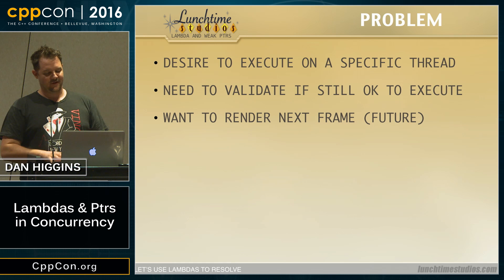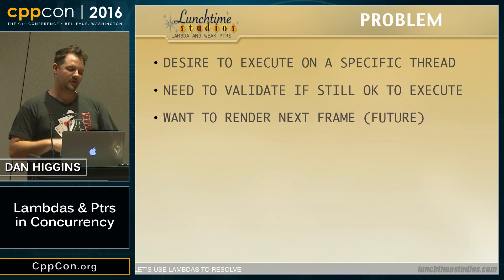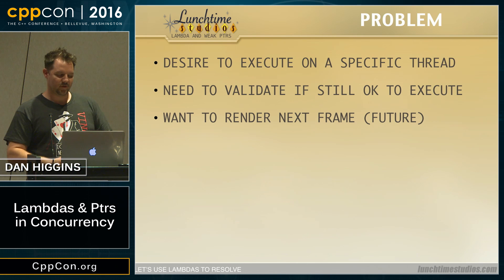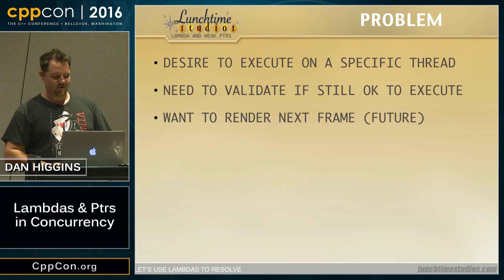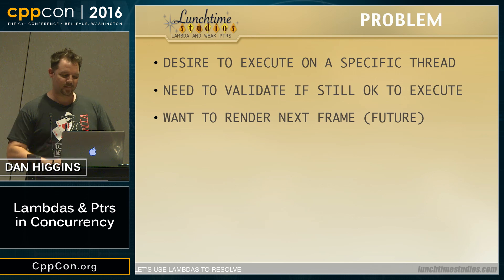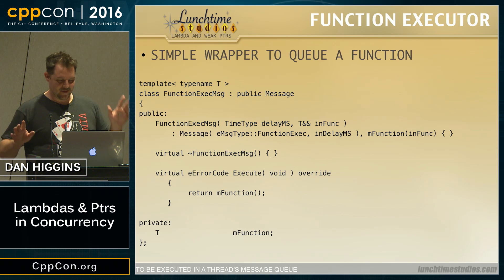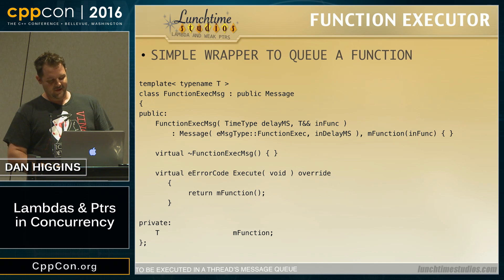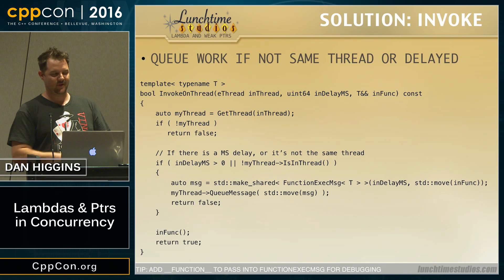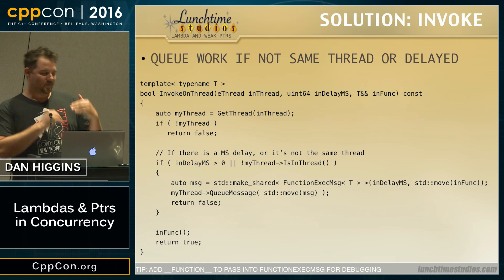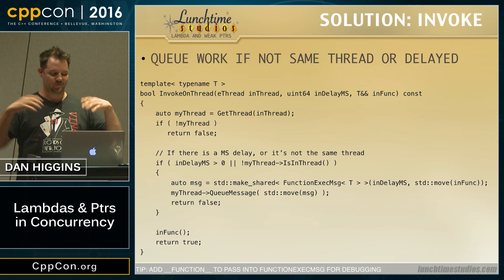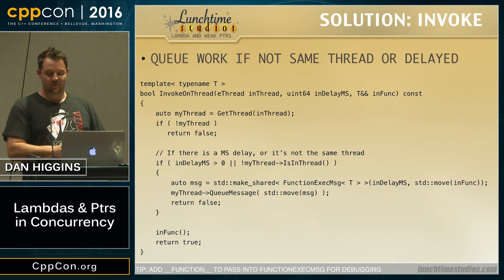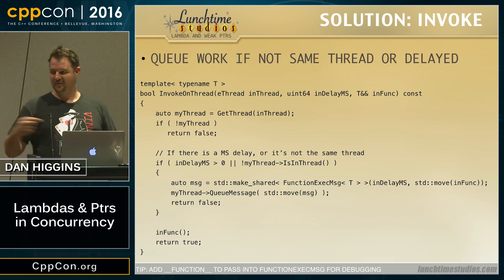Where it gets really fun is combining shared pointers and lambdas. If I want to do something in the future, I can queue a lambda somewhere, but you need to validate it to make sure it can work. Imagine having an object I want to render next frame — I want that code to execute in the future without keeping track of it. You can invoke it on a thread and say execute at 10 or 100 milliseconds in the future, or check you're on the right thread and dispatch to it.